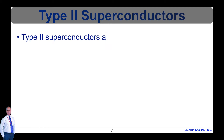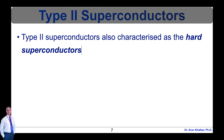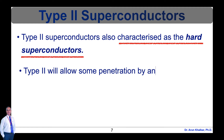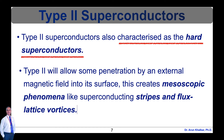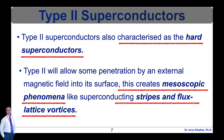Type 2 superconductors, also known as hard superconductors, differ from type 1 in that their transition from a normal to a superconducting state is gradual across a region of mixed state behavior. Since a type 2 will allow some penetration by an external magnetic field into its surface, this creates rather novel mesoscopic phenomena like superconducting stripes and flux lattice vortices.